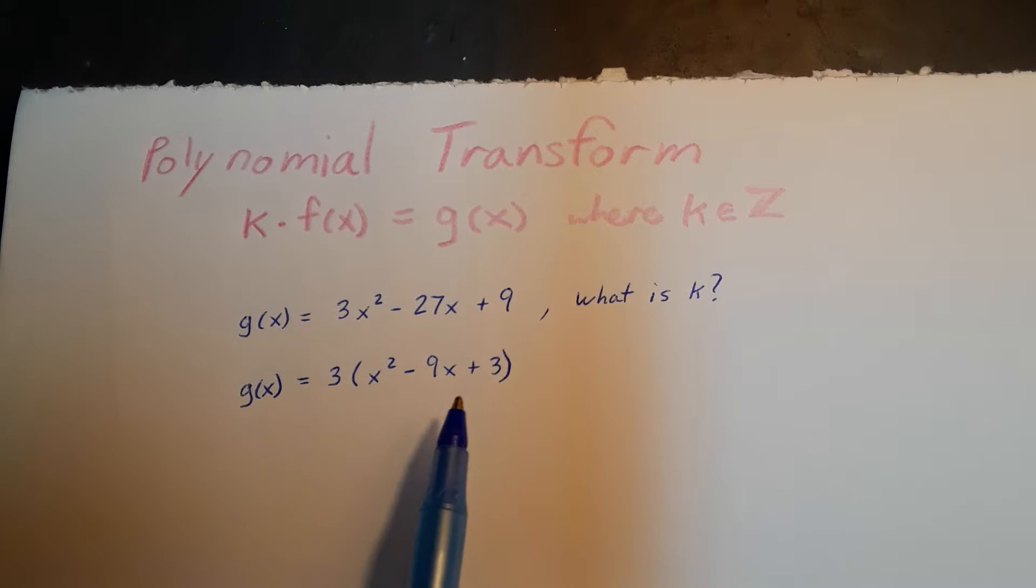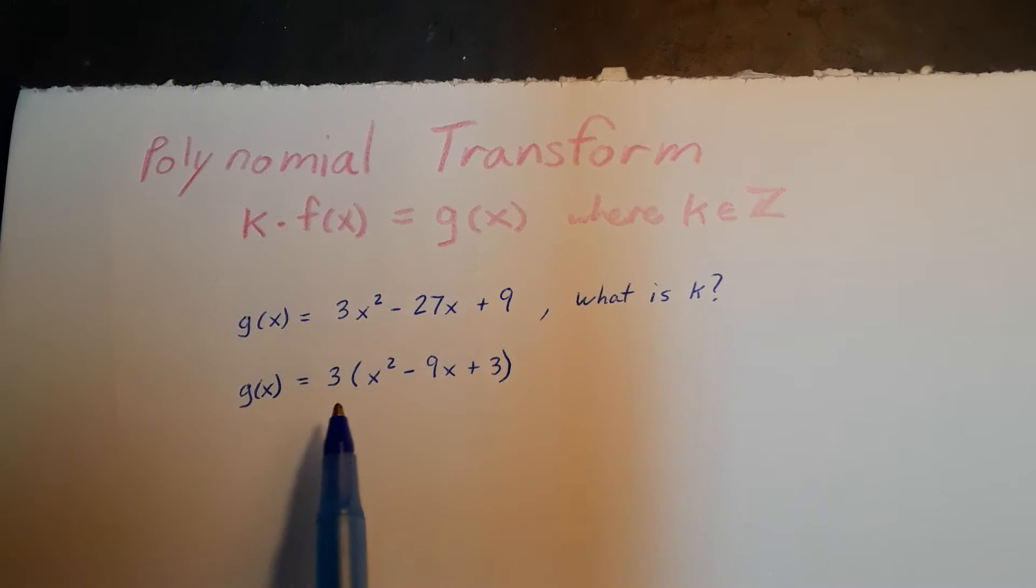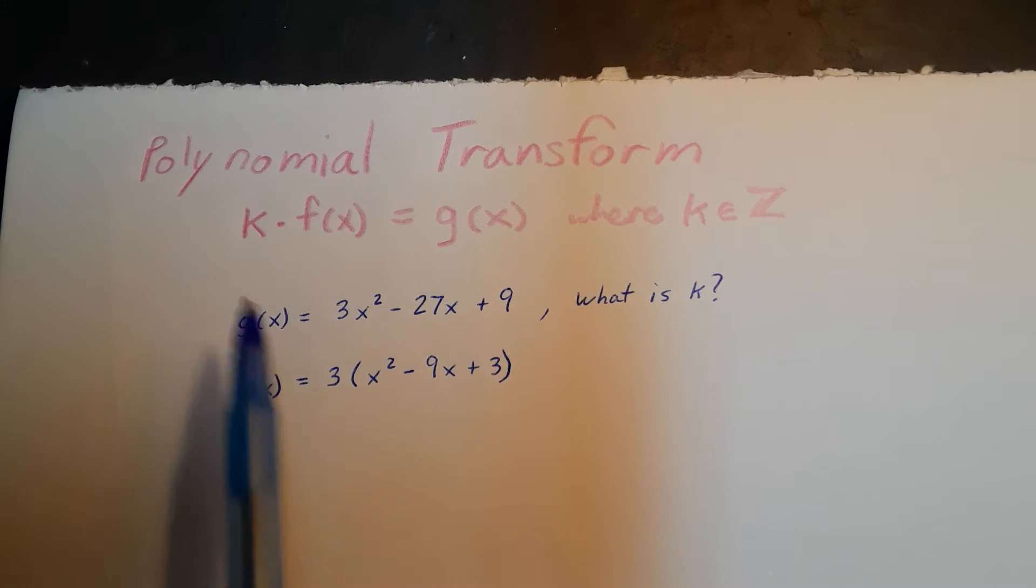When we factor 3 out, we see that we have 3 times a polynomial. This polynomial in parentheses is our f of x. The 3 is going to be our k.